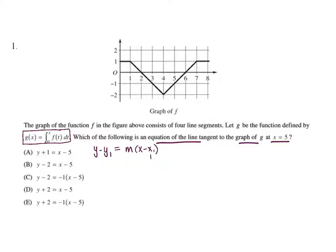We're given that x1 is 5, so now we need to find m and y. Just like our traditional methods, if we have x we need to plug in to find y. So g at 5 is equal to the integral from 0 to 5 of f at t dt.